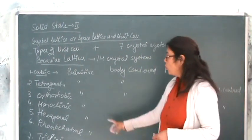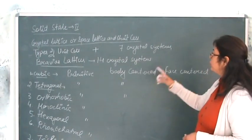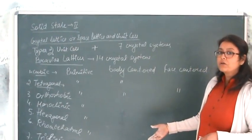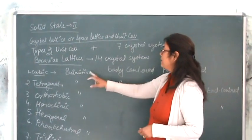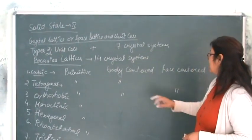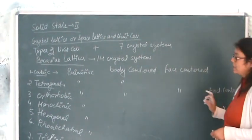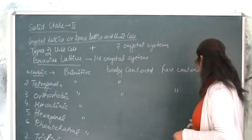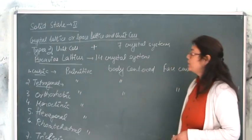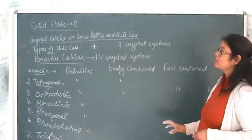So now we are counting all the unit cells, types of unit cells which are present in your 7 crystal systems. So you have 1, 2, 3, 4, 5, 6, 7, 8, 9, 10, 11, 12, 13 and 14. So in total it makes 14 crystal systems,